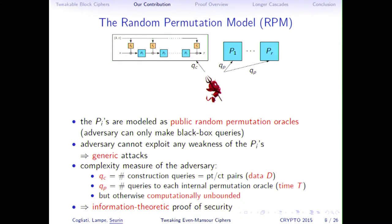It's a bit like using the random oracle model in public-key cryptography. Once you instantiate your public permutations, you only get heuristic security. But if they are sufficiently complicated, you can hope that your construction is secure up to the bound proven in the random permutation model.